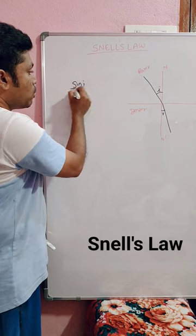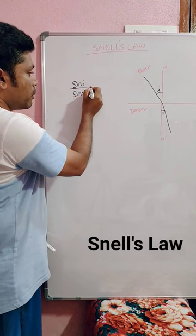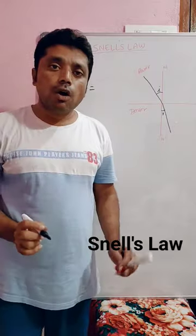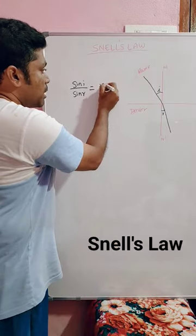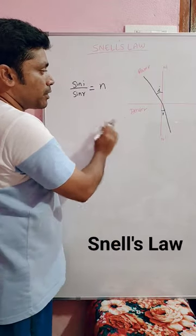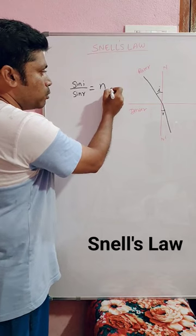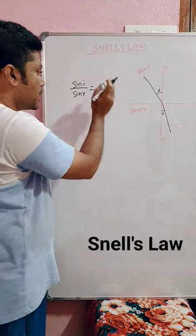The ratio of sine of angle of incidence to the sine of angle of refraction gives us a constant value, which is nothing but the refractive index of the second medium with respect to the first medium. So this is Snell's law.